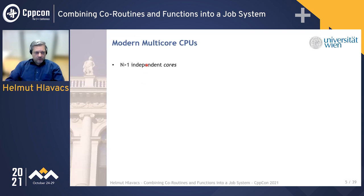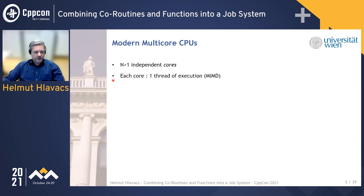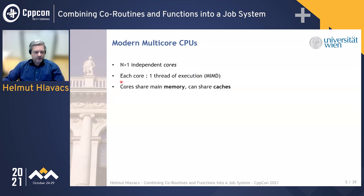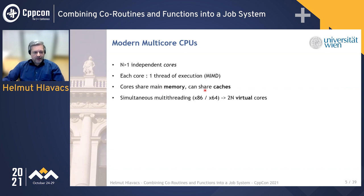That's a lot of work to be done in a very short time. Modern multi-core CPUs offer many cores nowadays, and these are independent cores. On each core you can run one thread of execution in a MIMD fashion — multiple instruction, multiple data. These threads are completely independent of each other. The cores usually share the same memory in a unified manner and can also share some caches.